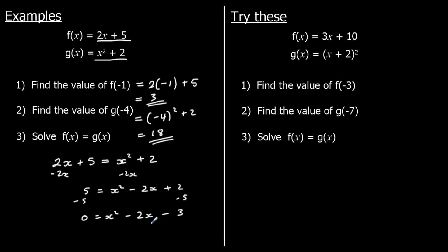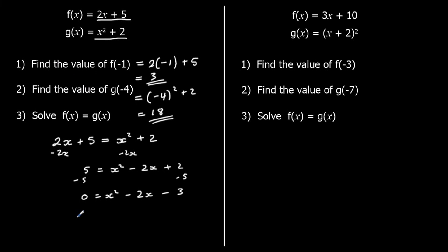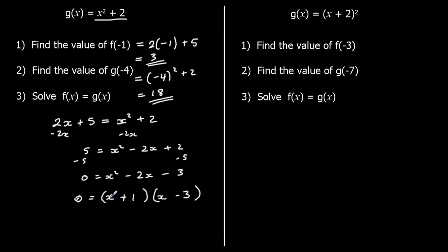We can solve it by factorising. We're going to have an x in both brackets. What multiplies to make negative 3? It's only 1 times 3 — it's a prime number — and adds to make negative 2. So plus 1 and minus 3. So what's x equal to? For the first bracket to be 0, x must be negative 1. And for the second bracket to equal 0, x is 3. So x can be negative 1 or 3.